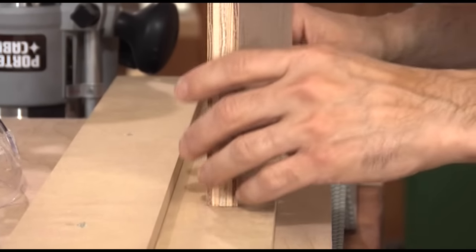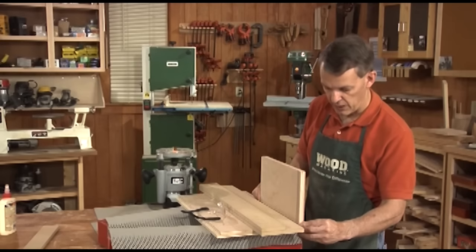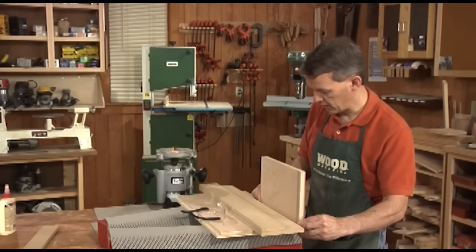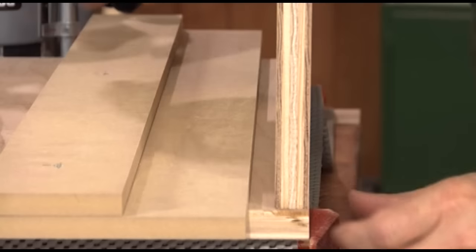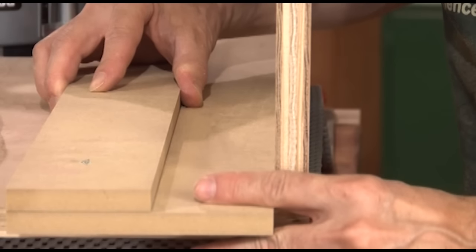So, if you want a rabbet that fits that perfectly, you can do that with this method. Use the piece that's going to fit into the rabbet as a gauge. Align it with the edge of the panel. And then just bring the jig right up to the other side.